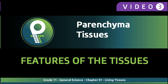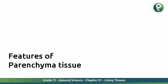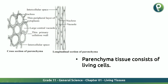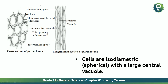The features of parenchyma tissue: first, parenchyma tissue consists of living cells — not dead cells. Second, the cells are isodiametric and spherical with a large central vacuole. You can see this particular region; the vacuole area is huge, as I am pointing with the red color pen. There is also a dot visible in the diagram.